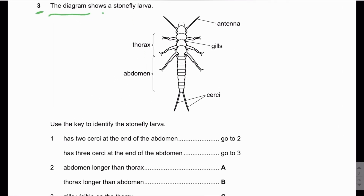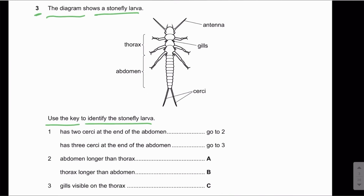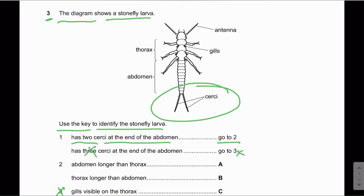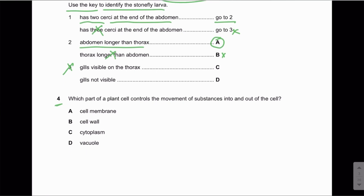MCQ number three: The diagram shows a stonefly larva — use the key to identify it. This MCQ is testing the concept of the dichotomous key, so we simply follow the instructions. Has two cerci at the end of the abdomen? Yes — there are two cerci and not three, so we go to two. Is the abdomen longer than the thorax? Yes, so the answer is A. Thorax is longer than the abdomen — no, so B is not correct.